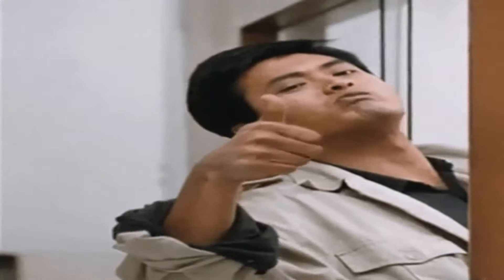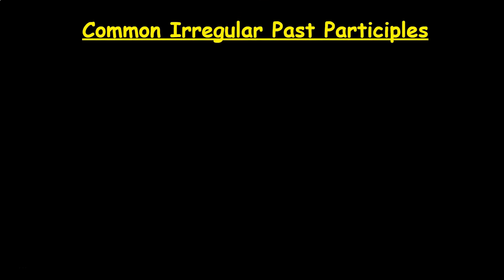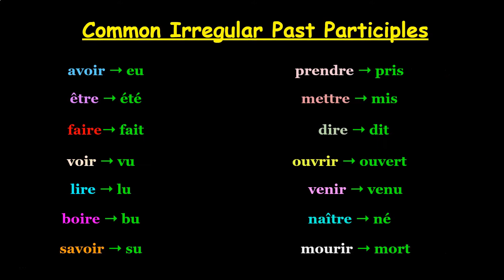If you know this pattern, you'll know how to conjugate most verbs in le passé composé. Unfortunately, there are still quite a few irregular past participles that play by their own rules. Here I listed some super common ones.